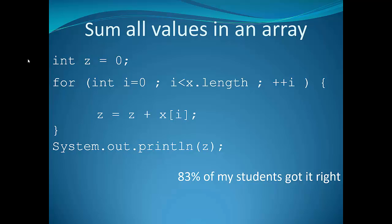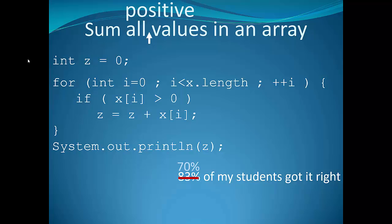But then I gave the students a second question with almost the same code. This second question only summed the positive values in the array. I actually just added that one line. 13% of the students got the first one right but got the second one wrong. In fact, they tended to give the same answer to both.